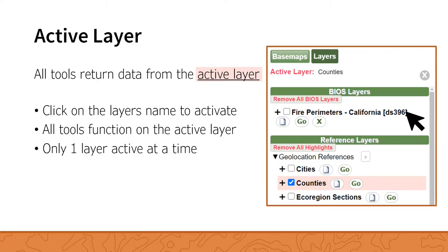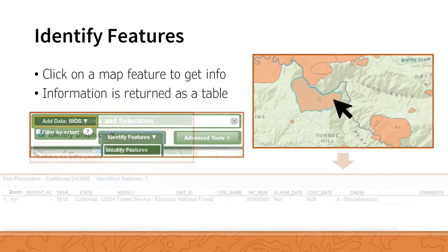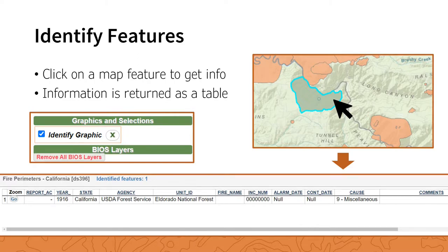All tools in BIOS work with the active layer. To make a layer active, click on the dataset name in the BIOS Layers section. The active layer is given a pink highlight and is called out above the list of BIOS layers — only one layer can be active at a time. The Identify Features tool is the default active tool in BIOS. Clicking on a feature in the active layer within the map selects it, and related attribute information is returned in a table below the map. To clear the highlighted feature, click the checkbox beside the Identify graphic item in the graphics and selections, or click the X button to remove it.